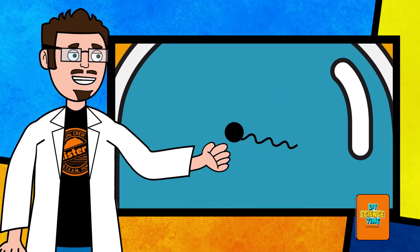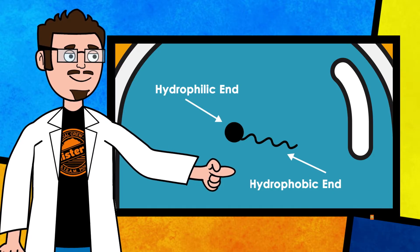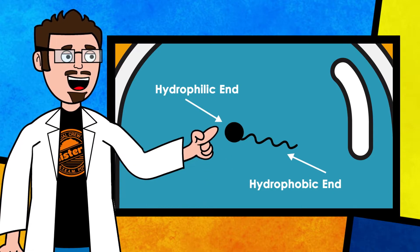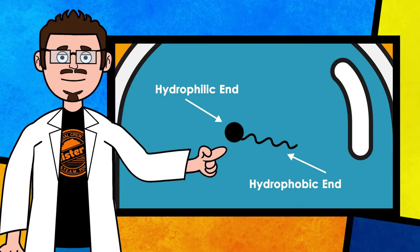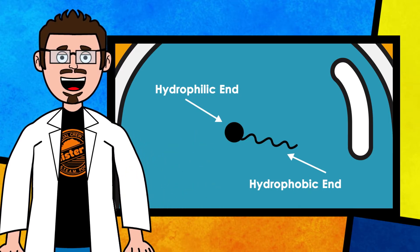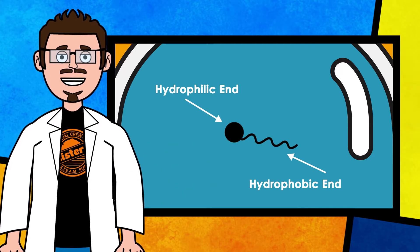The reason soap works so well is because soap molecules have two ends: a hydrophobic end and a hydrophilic end. The hydrophilic end is attracted to water while the hydrophobic end avoids water and is attracted to grease and oils.